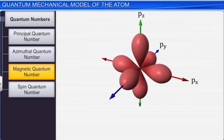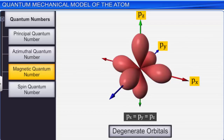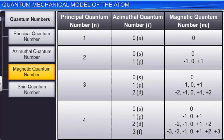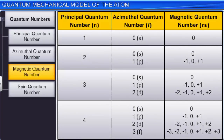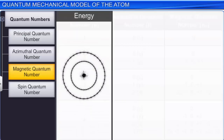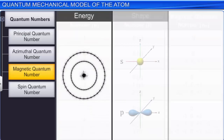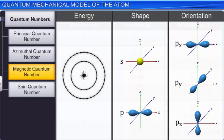Hence, for l = 0, the S sub-shell can have only one orientation in space and only one orbital. For l = 1, the P sub-shell can have a maximum of 3 orbitals with orientations along the 3 axes. Similarly, for l = 2, the D sub-shell has 5 preferred orientations and hence 5 orbitals. Using the same calculation, F, G, and H sub-shells can have 7, 9, and 11 orbitals each. Note that all orbitals belonging to a sub-shell have the same energies and therefore are called degenerate orbitals. Thus, the three quantum numbers can very well define the energy, shape, and orientation of atomic orbitals.